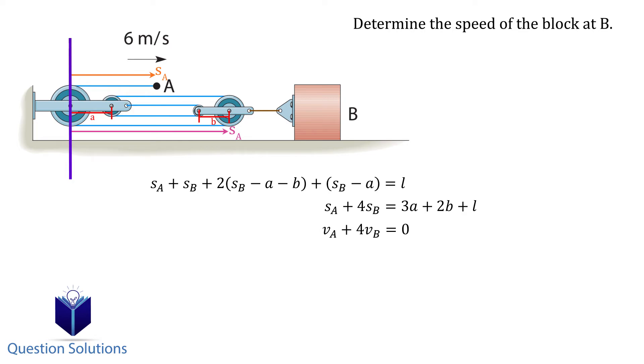We know the velocity at A which is 6 meters per second to the right. Plugging that in and solving gives us the velocity of B which is negative 1.5 meters per second or 1.5 meters per second to the left.